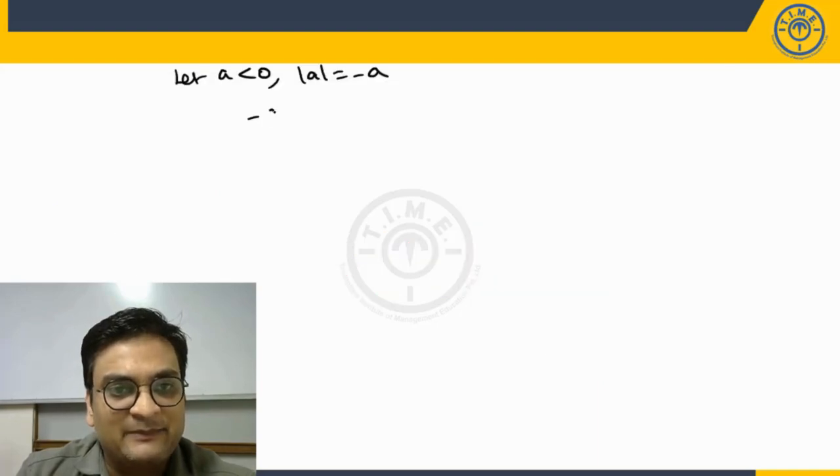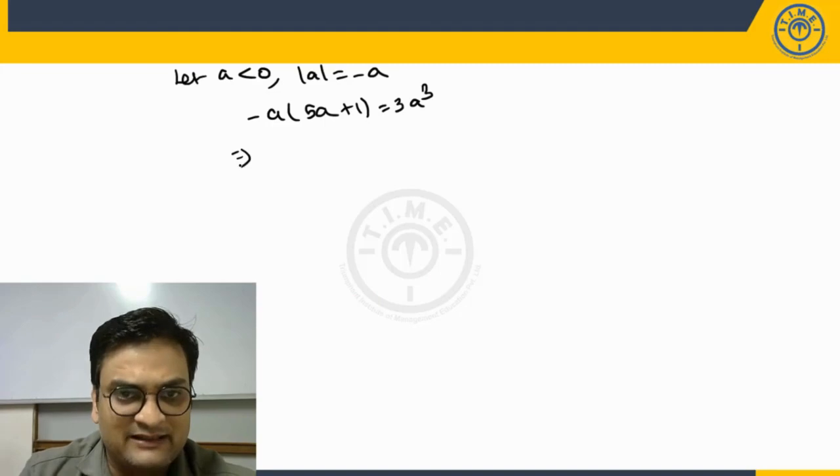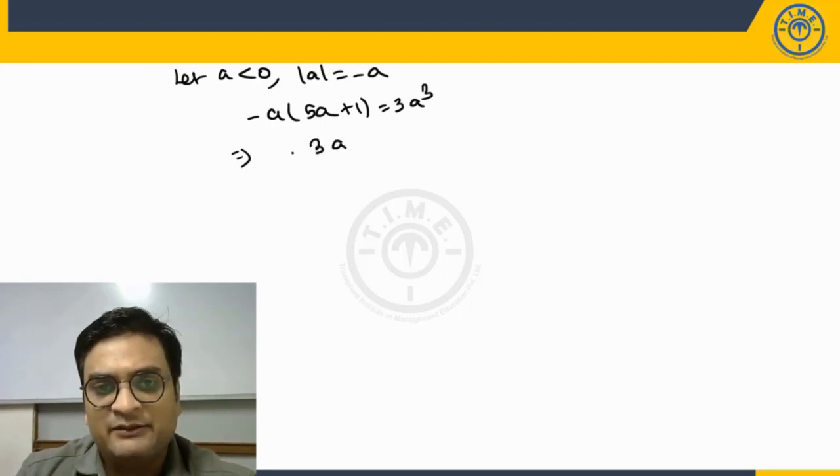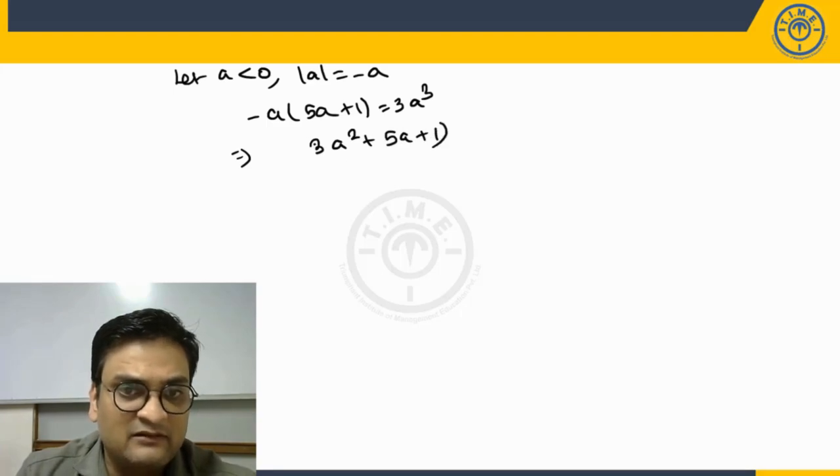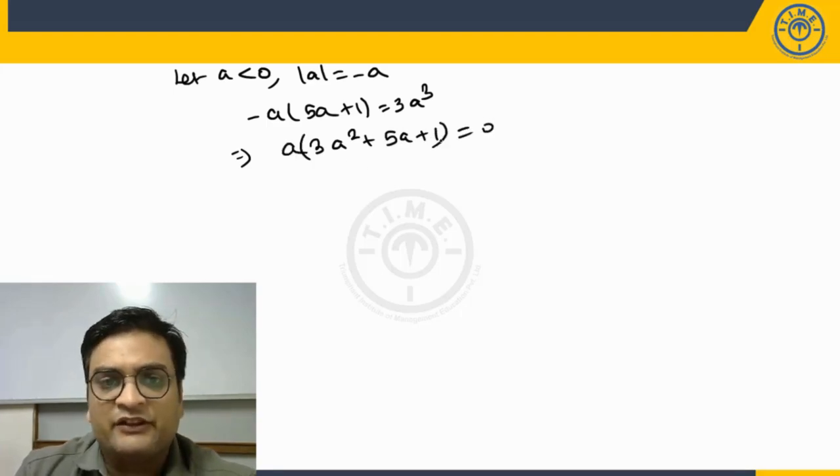And then the equation will change as minus a into 5a plus 1 is equal to 3a cube. Let us bring all terms on one side again. So when I do that, a will be common, 3a square plus 5a plus 1 is equal to 0.